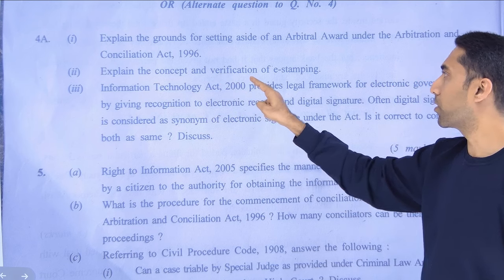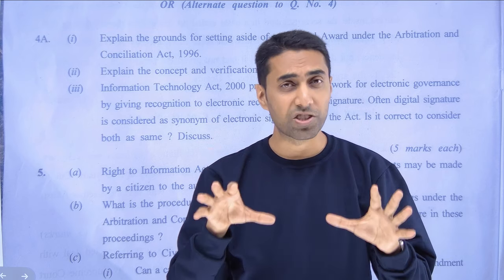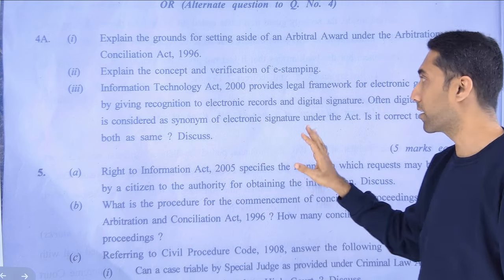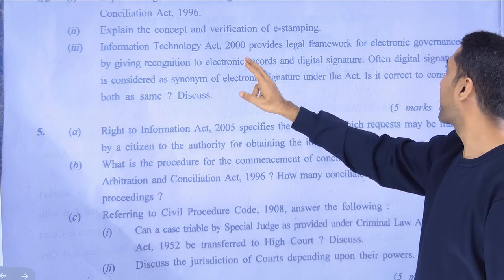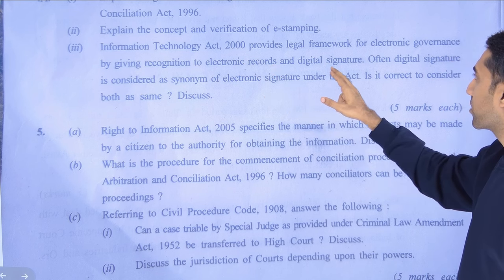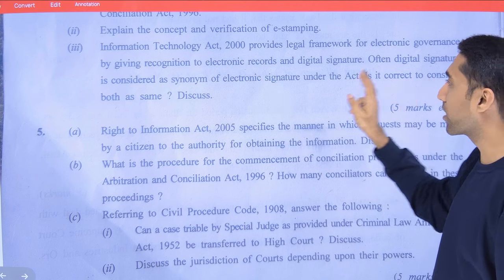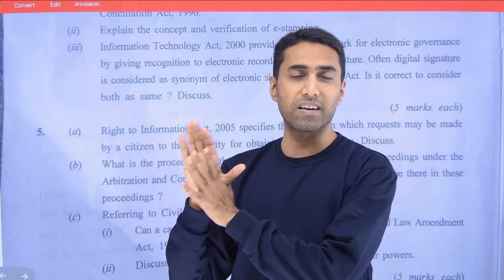The next question asks you to explain the concept of verification of e-stamping — what is e-stamping and what is its verification. Again, a five-marks direct question. The question paper has a good mix of case law application and theoretical direct questions. There is also a question about the Information Technology Act, asking whether digital signature is the same as electronic signature. It is a simple direct question — digital signature and electronic signature are different, and you have to write about the token and related aspects.